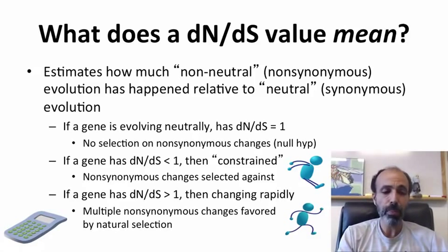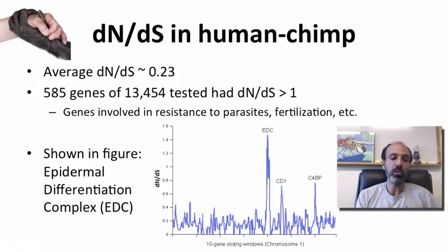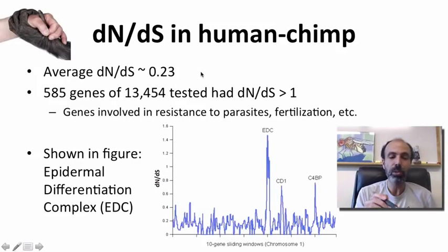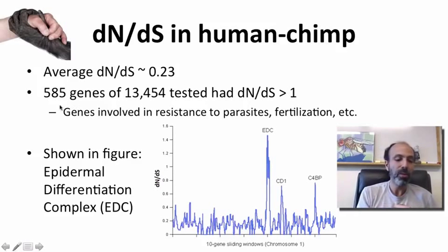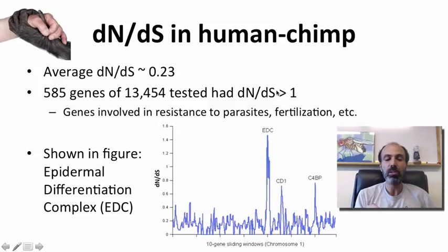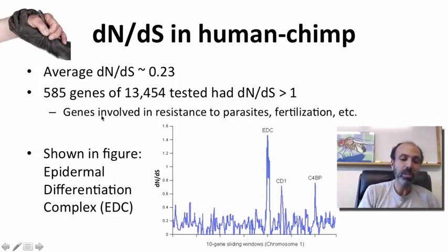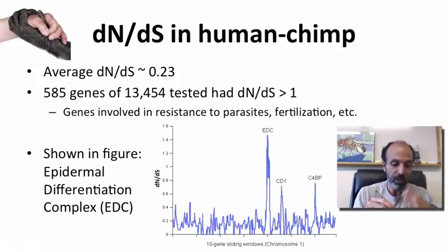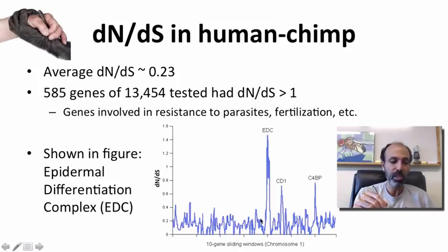Here is a plot of dN/dS values between humans and chimps. The average dN/dS across the genome is 0.23, so that 0.25 we calculated was fairly typical. There are 585 genes out of 13,000 tested that have a dN/dS value greater than 1 — these are undergoing recurrent positive selection. These are often genes involved in resistance to parasites or fertilization. The figure shows a sliding gene window with peaks, and for example the epidermal differentiation complex is associated with a very high dN/dS value.